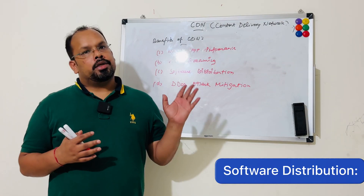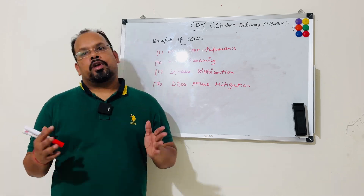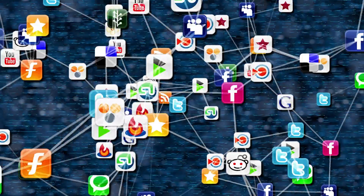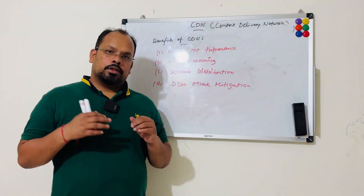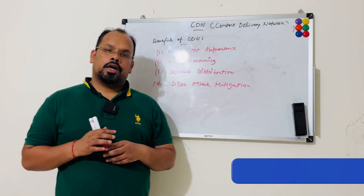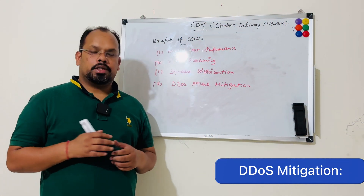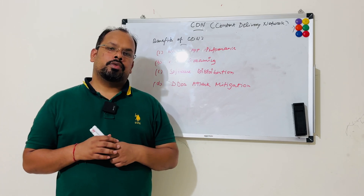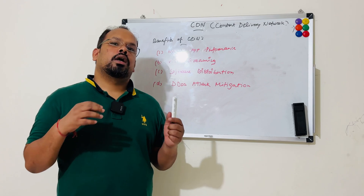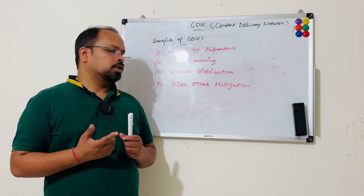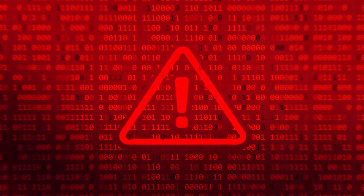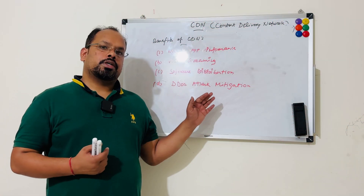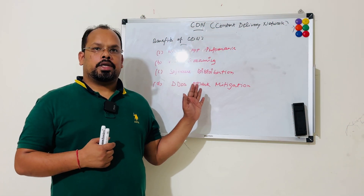Number three is software distribution — worldwide, CDN is used for software updates or patches delivered to end users for reliable updates. The last use case is DDoS attack mitigation. Since CDN does load balancing and distributes requests to different edge servers, it also filters out malicious requests, protecting us from malicious activity.